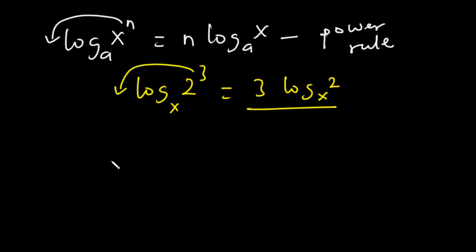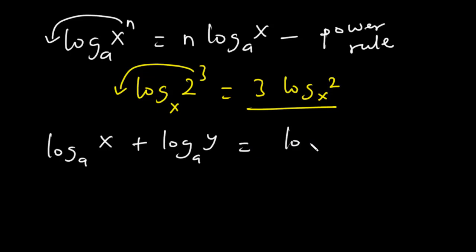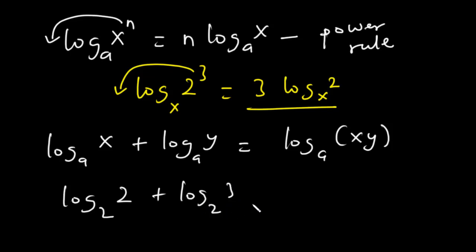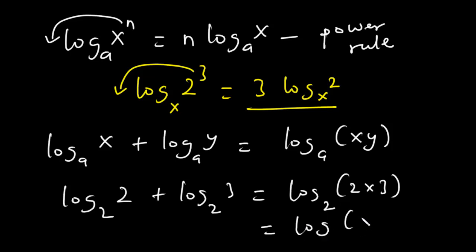Now let's talk about the product rule. Log x base e plus log y base e is equal to log(xy) base e. Basically, if you want to add two logs of the same base, you multiply x and y to get log(xy) base e. For example, log 2 base 2 plus log 3 base 2 gives you log(2×3) base 2, and since 2 times 3 is 6, you get log 6 base 2.